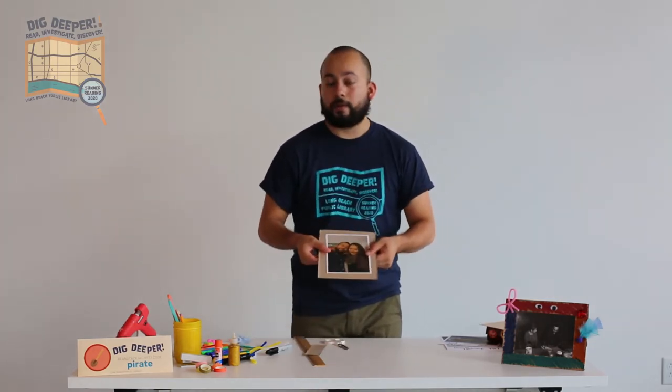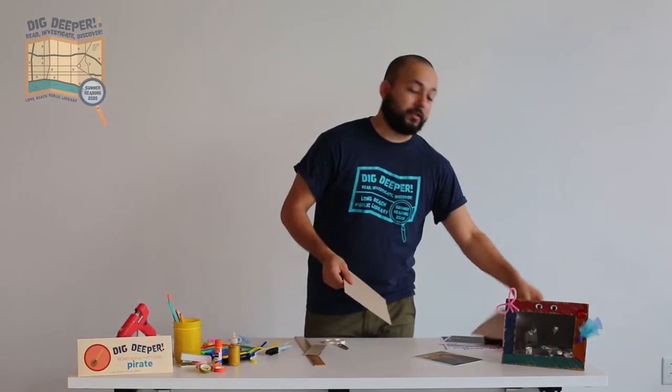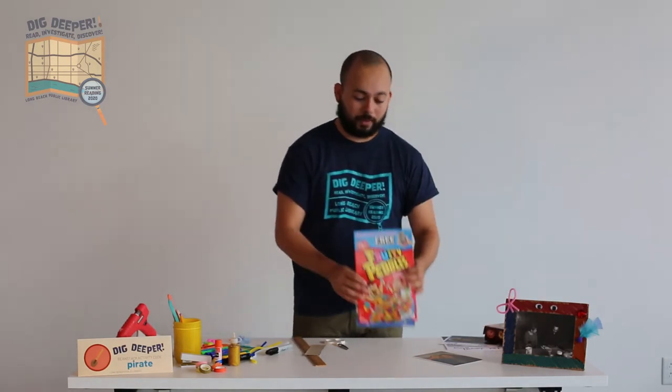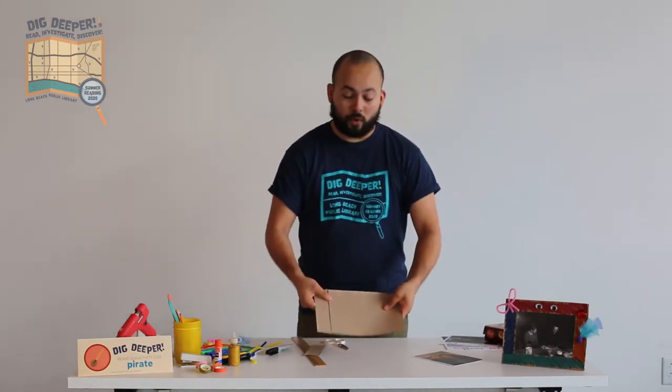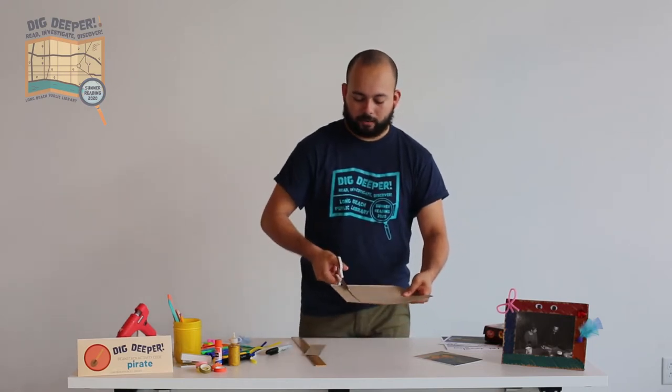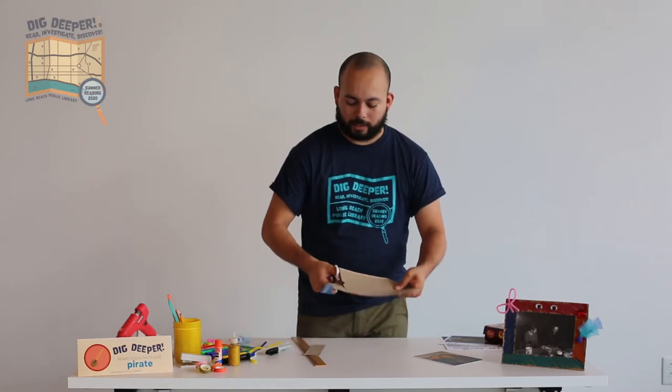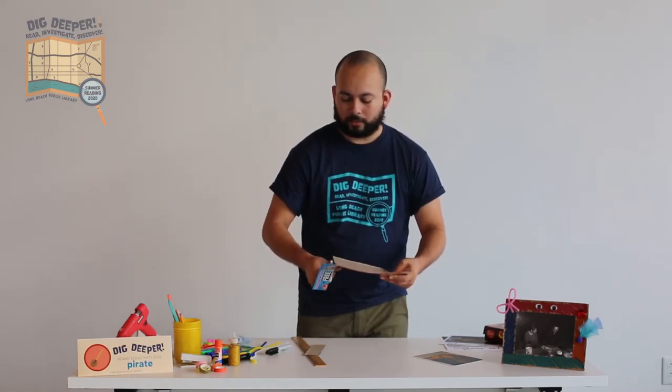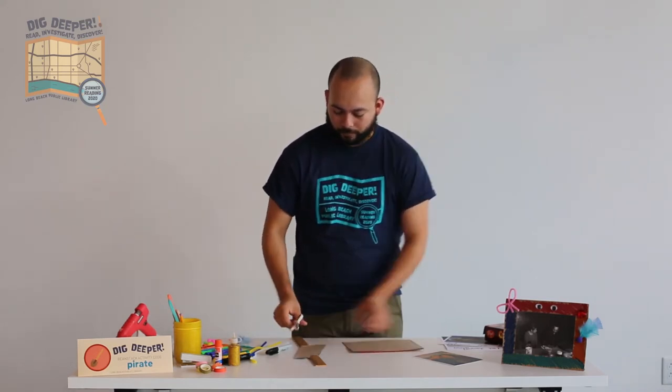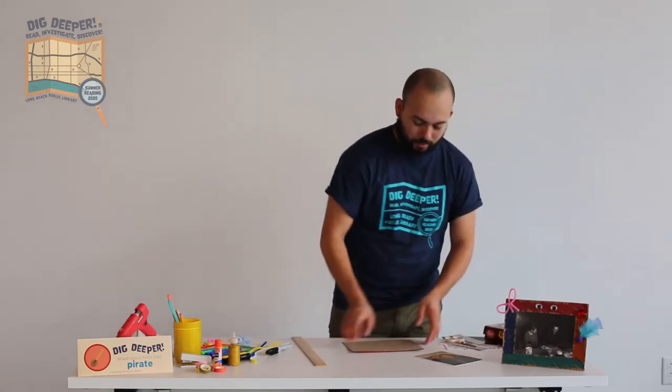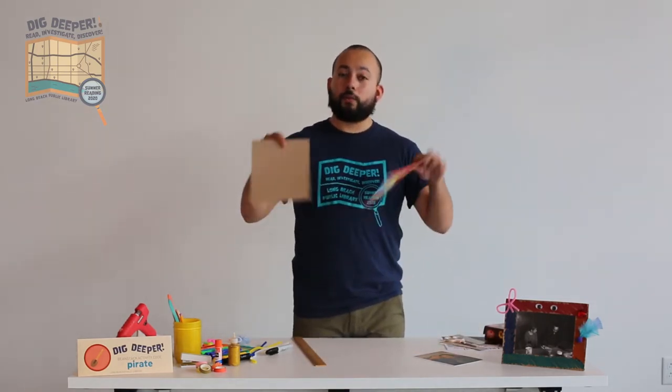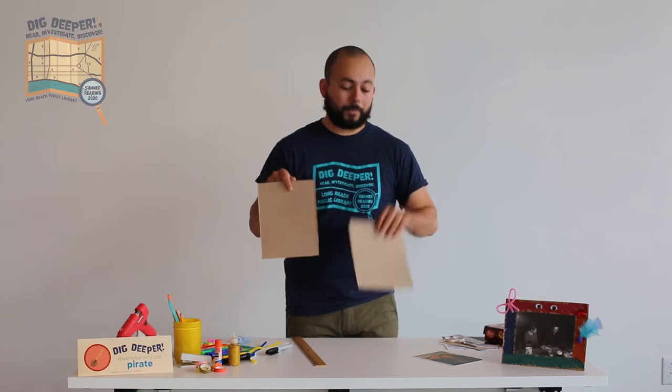Cool. So this is going to be the back of our frame. What we need to do with this other panel is do the same thing. Now that you've already got one that's the correct size, you can just lay it on top and cut it out. Or if you really feel like it, you can also trace the line onto it and then cut it that way. I'm just going to cut it out like this. All right. Perfect. So now I've got two panels that are going to serve as my picture frame.